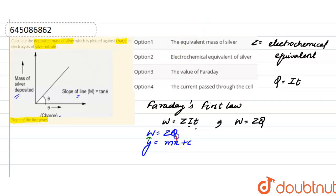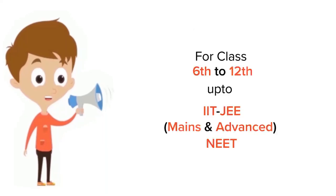There is no intercept; the intercept is zero here. So we have to find out the slope, where slope equals Z, and Z is the electrochemical equivalent. The correct option here will be option 2: electrochemical equivalent of silver is the slope of the line in the given graph. So the correct option here is option 2 for class 6